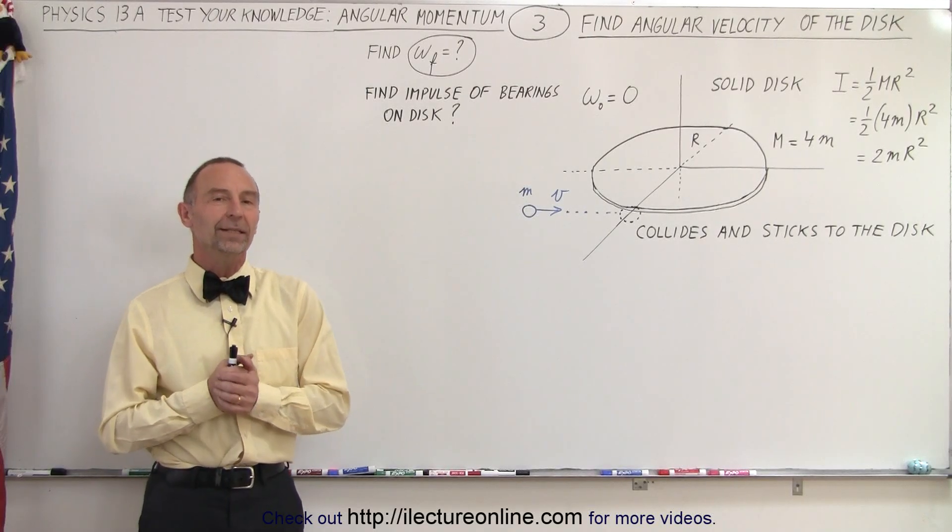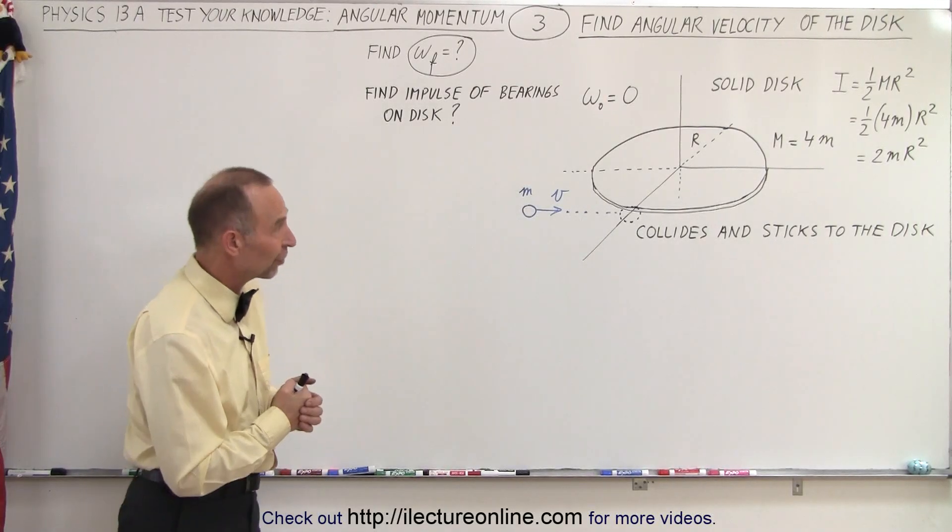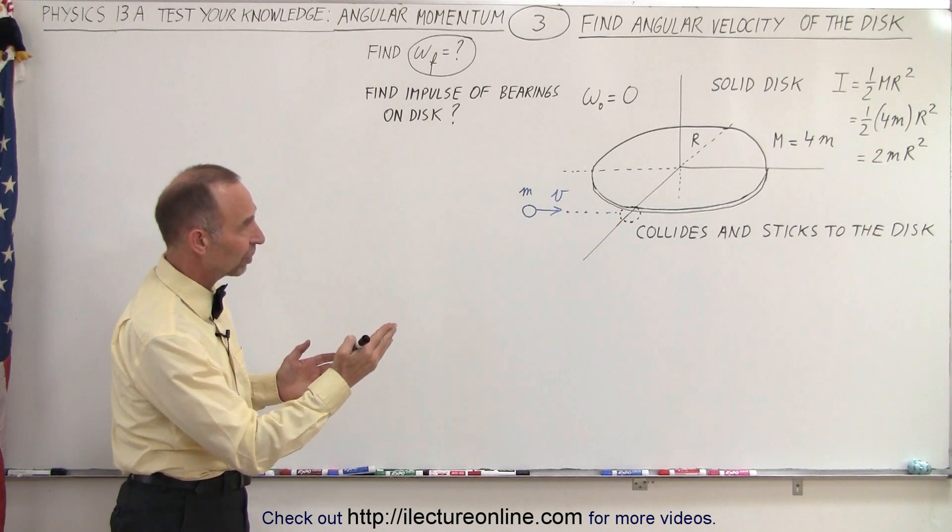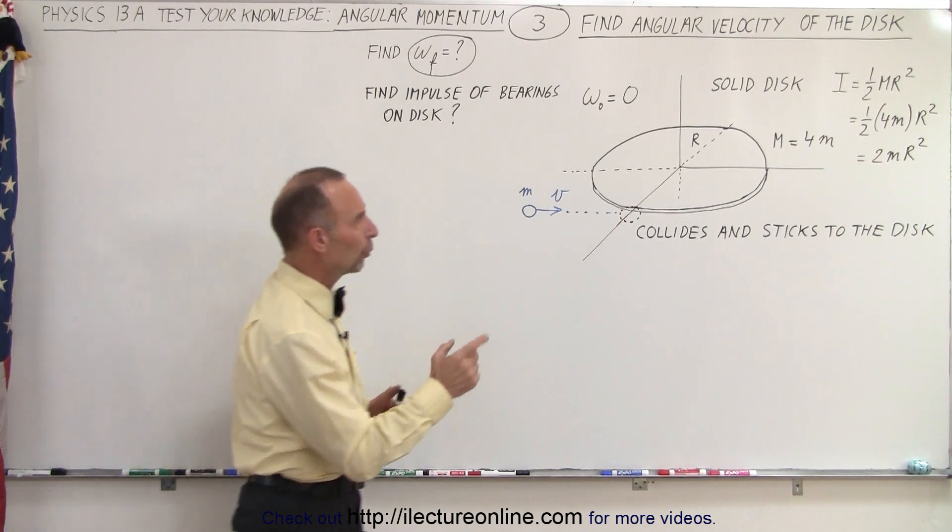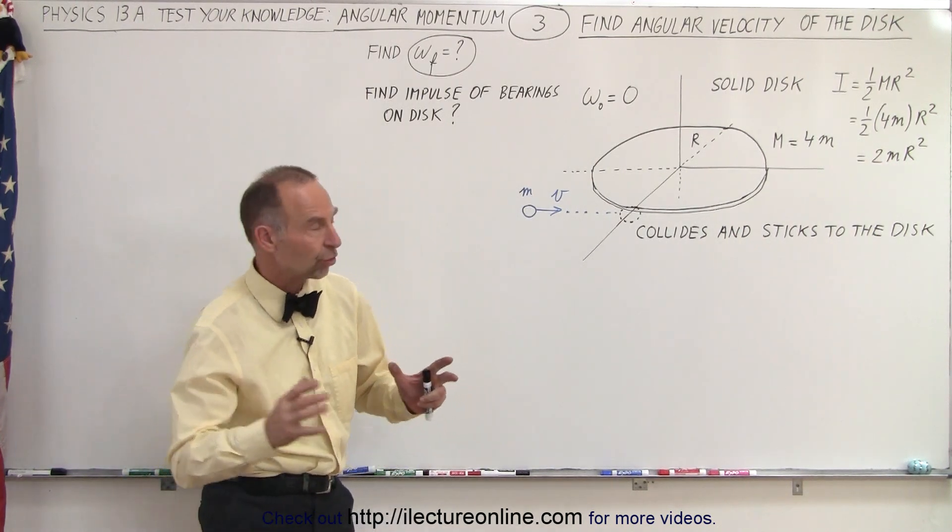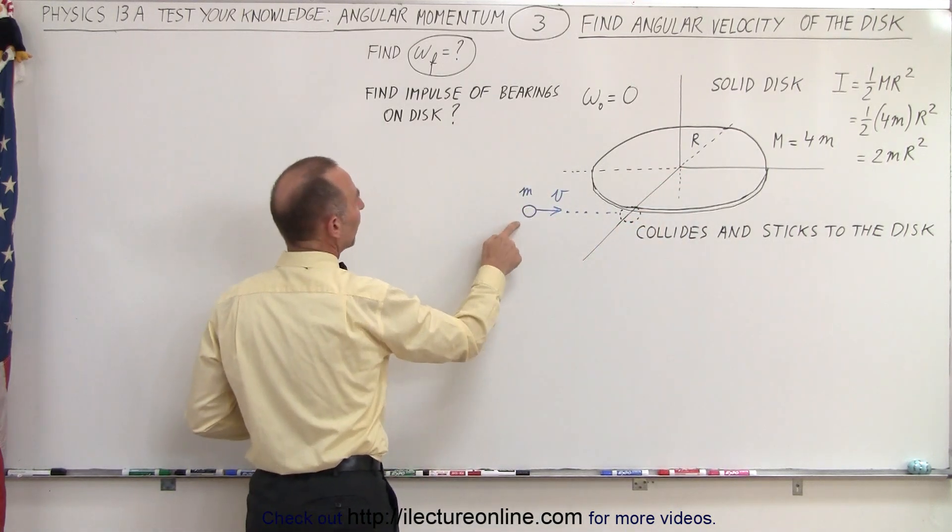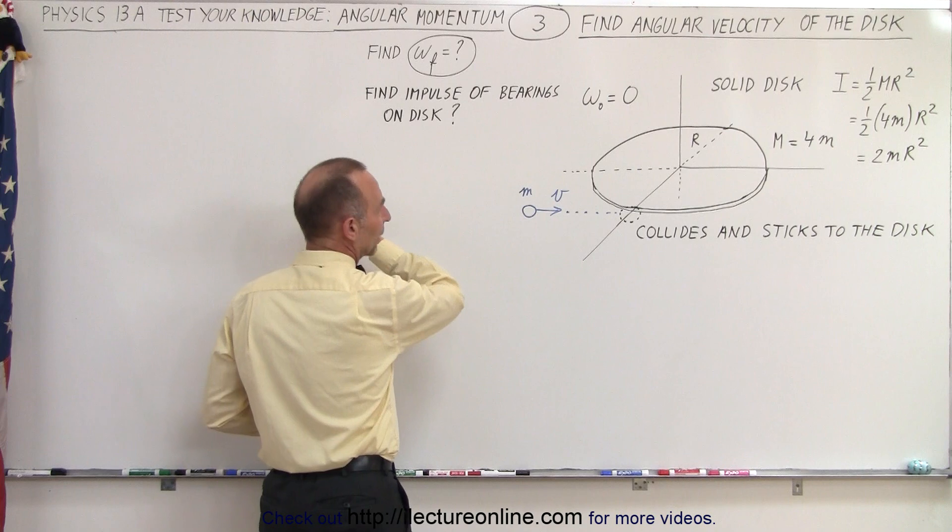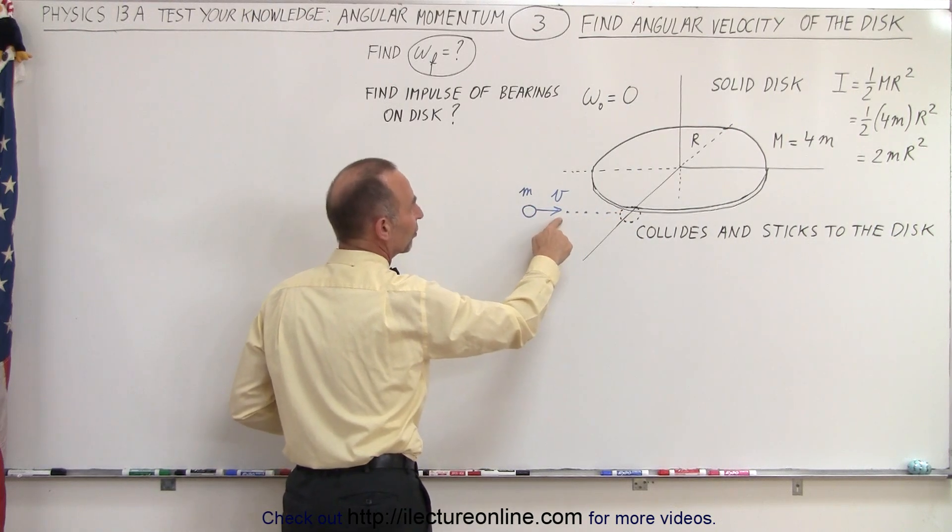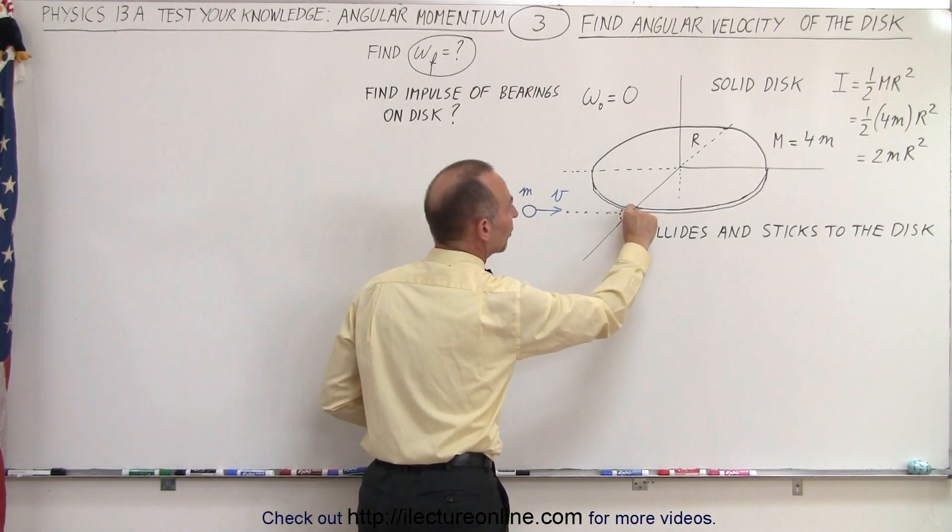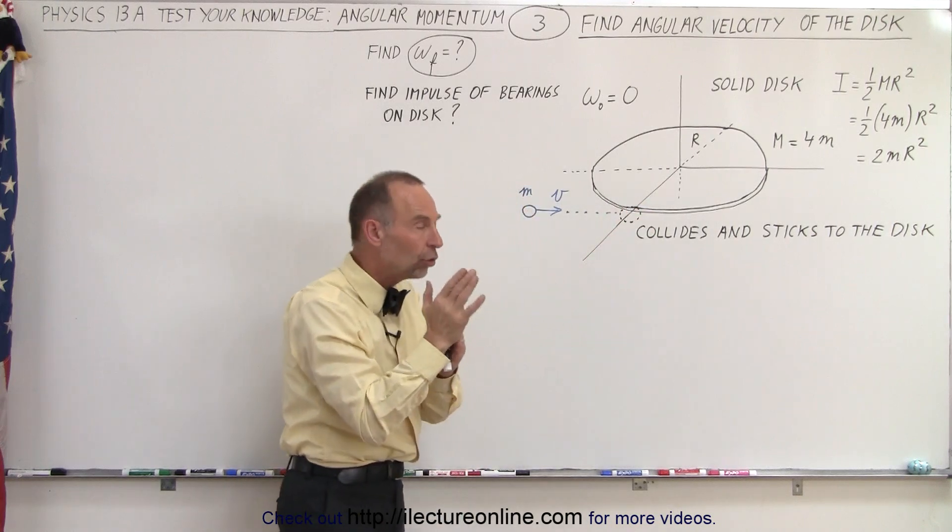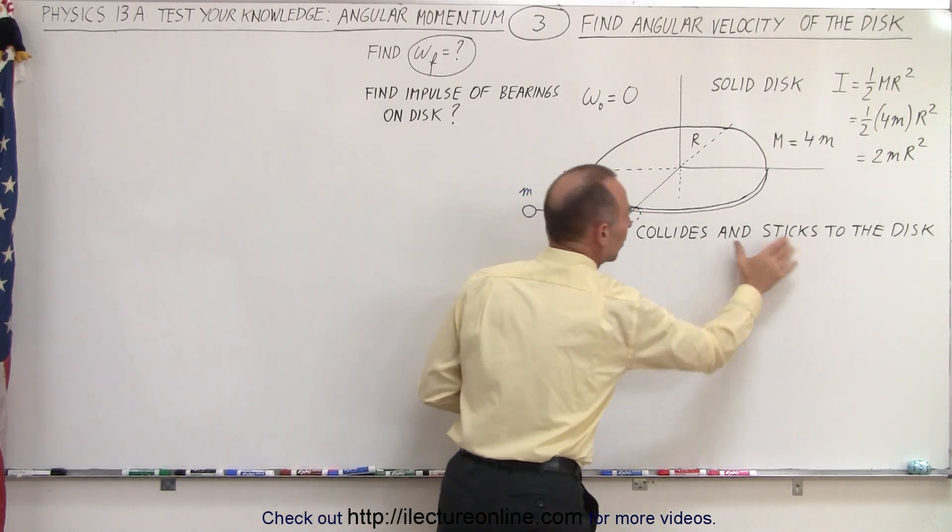Welcome to our lecture online. Our next problem is kind of interesting. We have a solid disk with mass equal to 4m. It is motionless and can rotate about this point right here. Another object with mass m is traveling at a horizontal path with velocity v and collides with the disk right tangent to the disk and sticks to the disk.